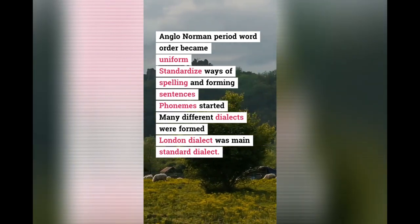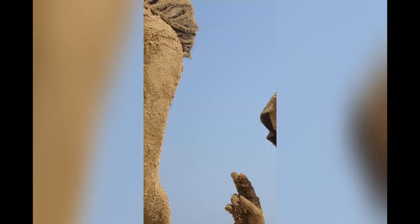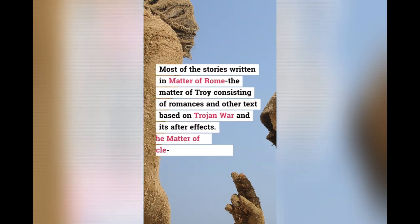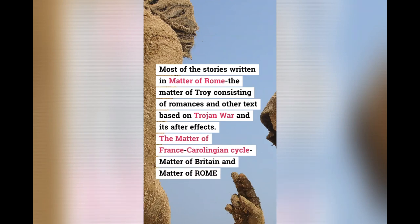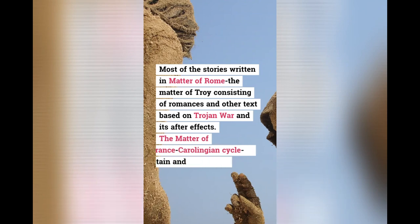Also, three cycles were mainly used during this time. Three cycles are kinds of stories or tales that were very prominent. The main cycles were the Matter of Britain, the Matter of France, and the Matter of Rome. Most stories in the Matter of Rome were about King Arthur and the legends of the time. The Matter of Rome also included what is referred to as the Matter of Troy, consisting of romances and texts based on the Trojan War and its aftermath. The Matter of France is also known as the Carolingian cycle.